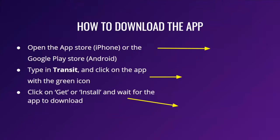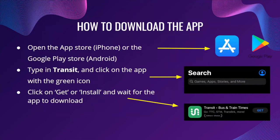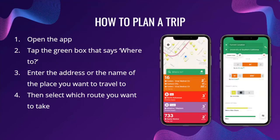To download this app, go to the App Store if you have an iPhone or Apple device, or the Google Play Store if you have an Android device. From there, type 'transit' into the search bar and click on the one that says 'Transit Bus and Train Times,' then click Get or Install and wait for the app to download. Once downloaded, you can plan a trip by opening the app and typing into the green box that says 'Where to.'